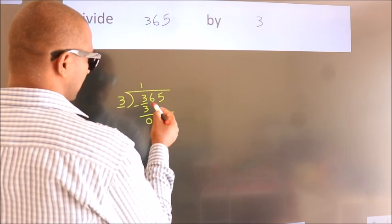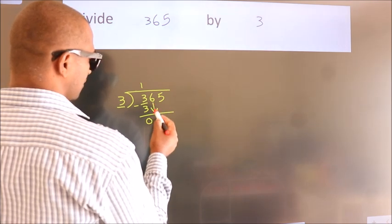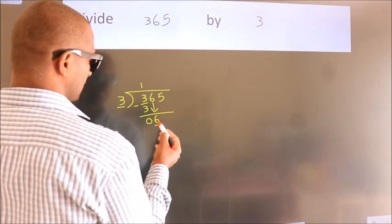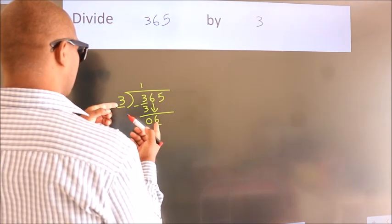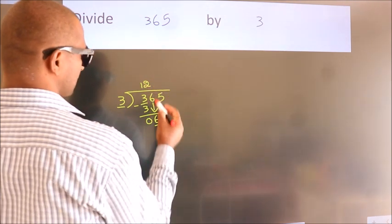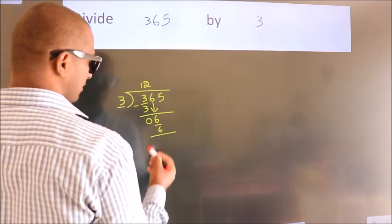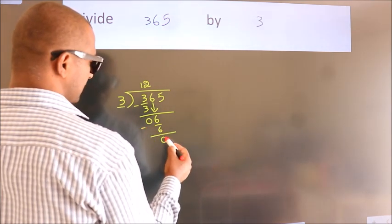After this, bring down the beside number. So, 6 down. When do we get 6? In 3 table, 3 twos 6. Now, we subtract. We get 0.